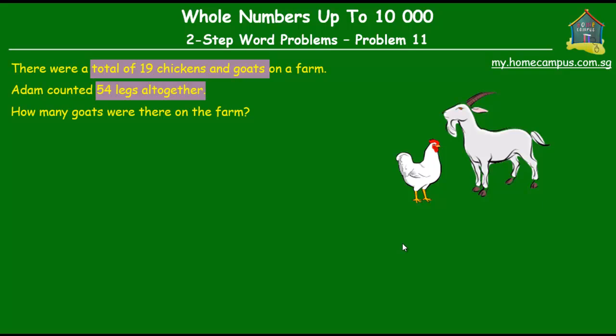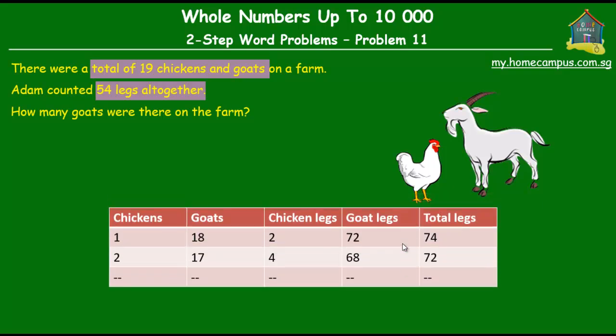One way to solve this question is to make a table with different combinations of the number of chickens and the number of goats, so that the count of the two kinds of creatures tallies to 19, until you get the combination where the count of the legs tallies to 54. You can use the table method, but it is a bit long and tedious, so we won't use that. Instead, we will use another method which might seem a bit complicated at first but is actually quite simple.